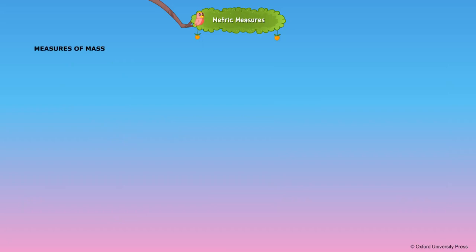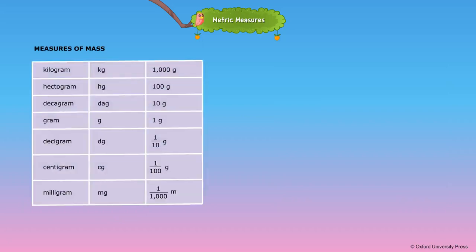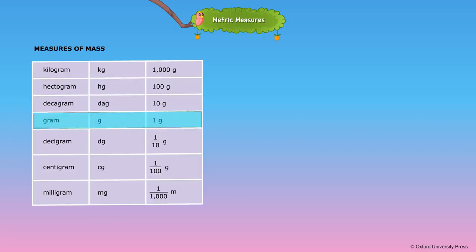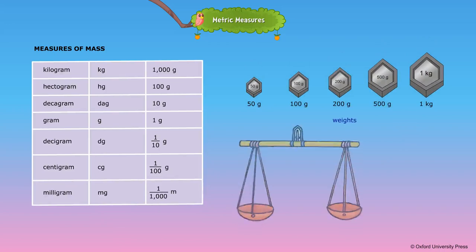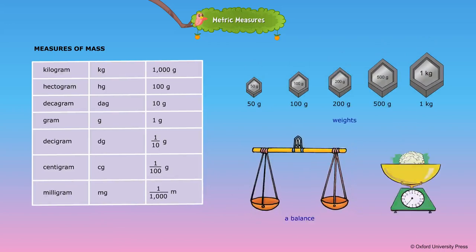Measure of Mass. The standard unit of weight is gram (g). The higher units of weight are kilogram (kg), hectogram (hg), and decagram (dAg). The smaller units of weight are decigram (dg), centigram (cg), and milligram (mg). We use a weighing scale to measure weight.